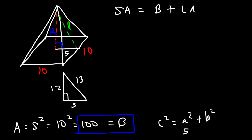So c squared is equal to a squared plus b squared. a is 5, b is 12. 5 squared is 25. 12 squared is 144. And so c squared is equal to 169. If you take the square root of 169, that will give you 13, which is the slant height.